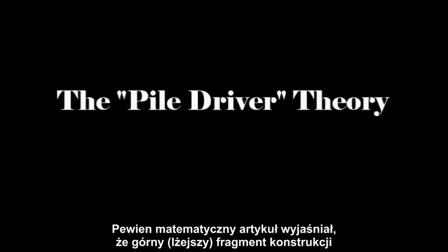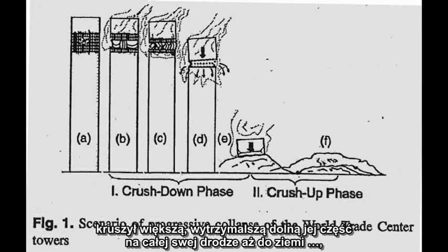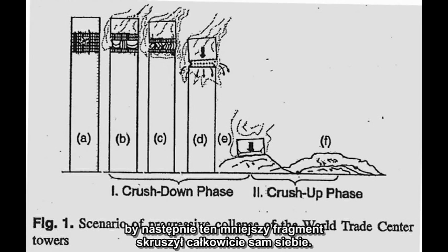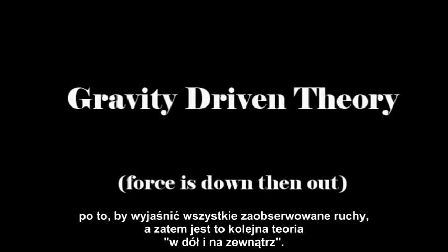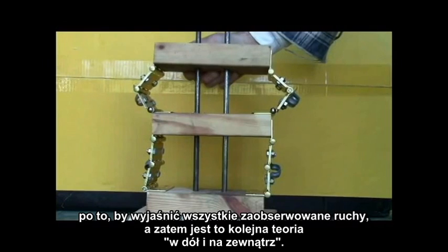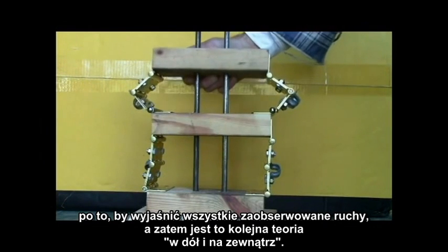A mathematical paper explained that the upper, lighter part of the structure crushed the larger, stronger, lower part all the way down to the ground, and then the smaller section crushed itself back up. Like the pancake theory, the pile driver theory relies on gravity for all the motions observed, and hence is another down-and-out theory.